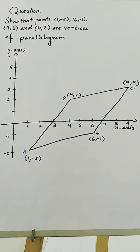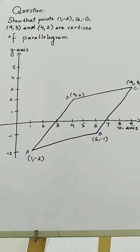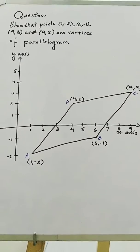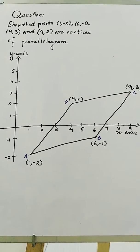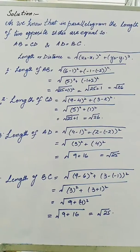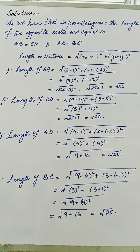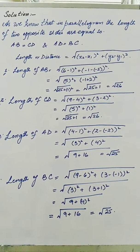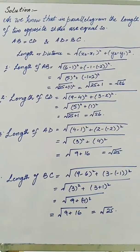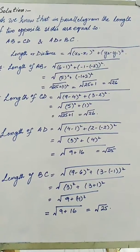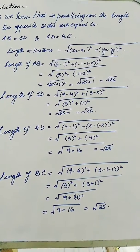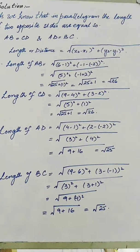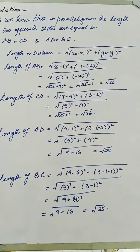In order to prove that it is a parallelogram, AB should be equal to CD and BC should be equal to AD. Now we will calculate the length of each line using the formula: root of (x2 minus x1) whole square plus (y2 minus y1) whole square.